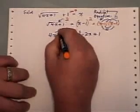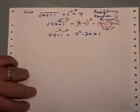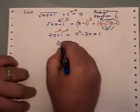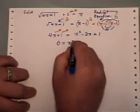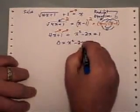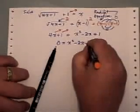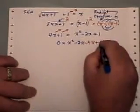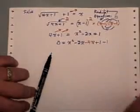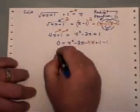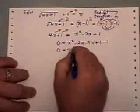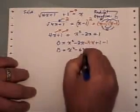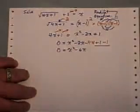Now let's make the left-hand side 0 by taking both of these guys across. So it's x squared minus 2x minus 4x. And plus 1 is here, and the plus 1 becomes a minus 1. So we end up with 0 is x squared minus 6x. These guys cancel.